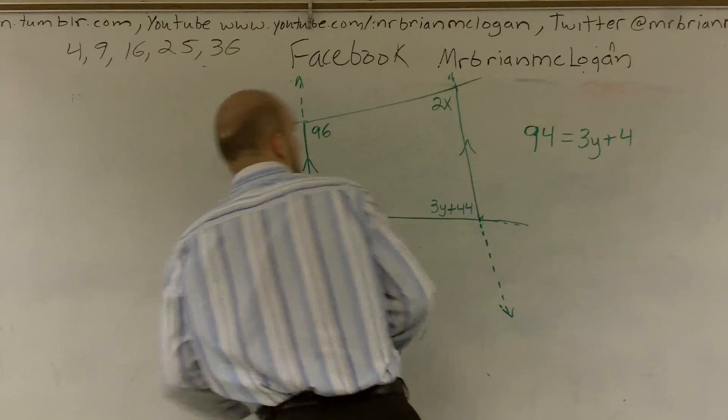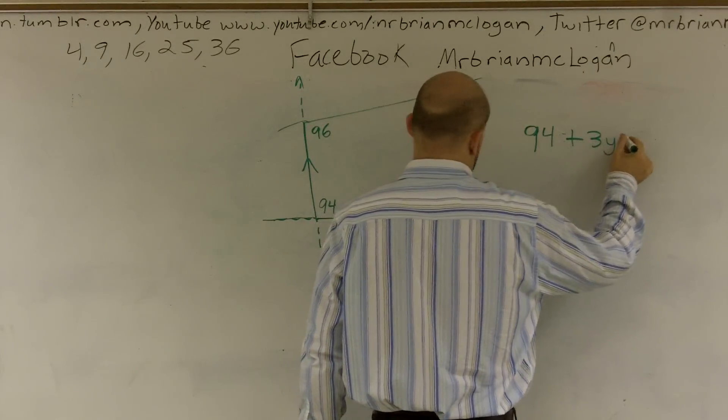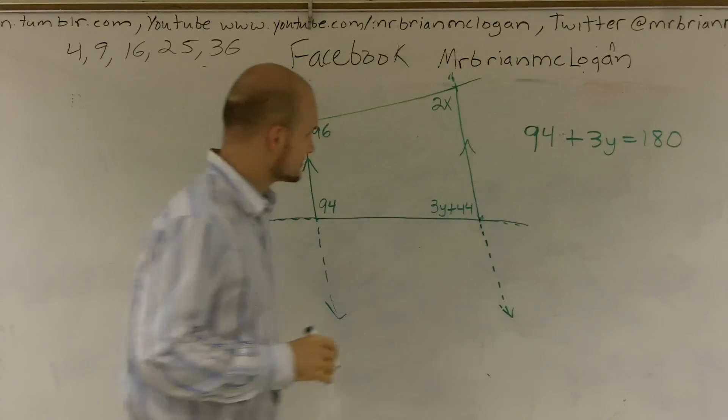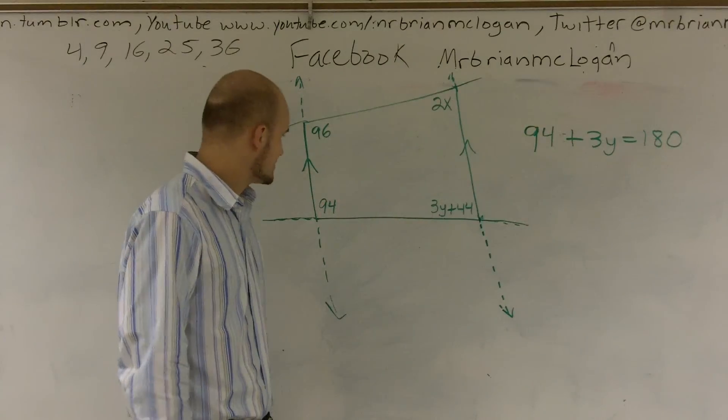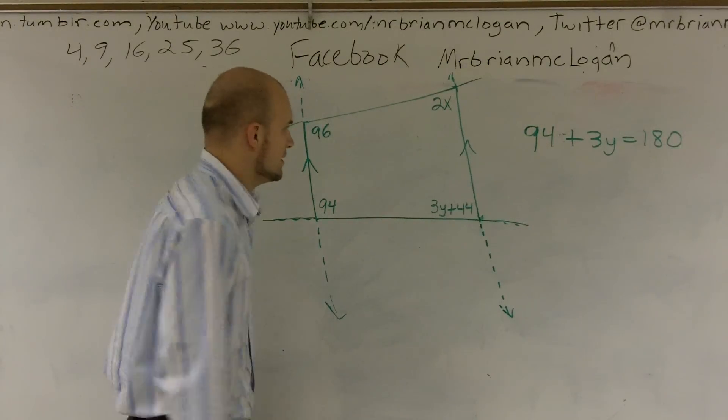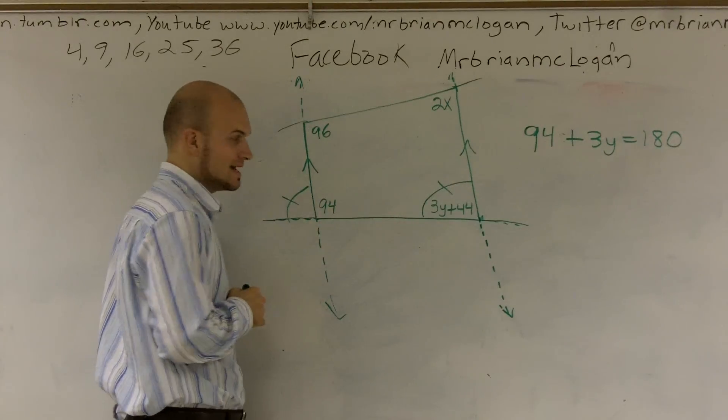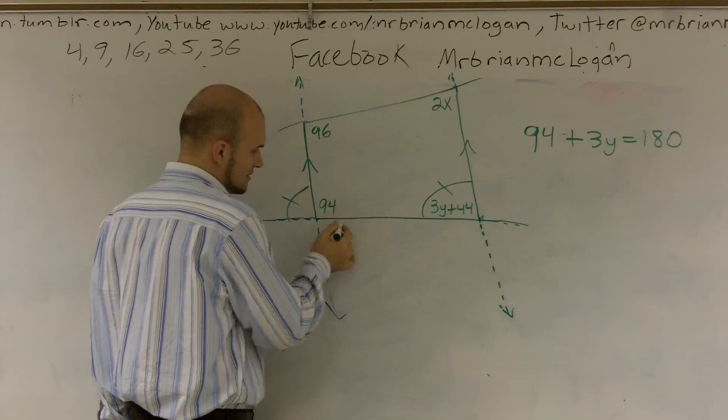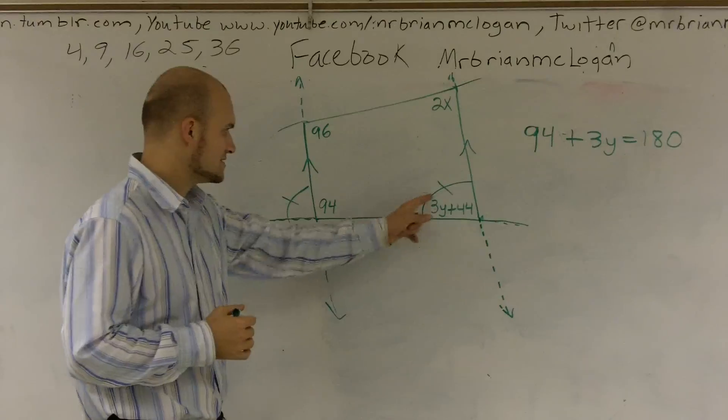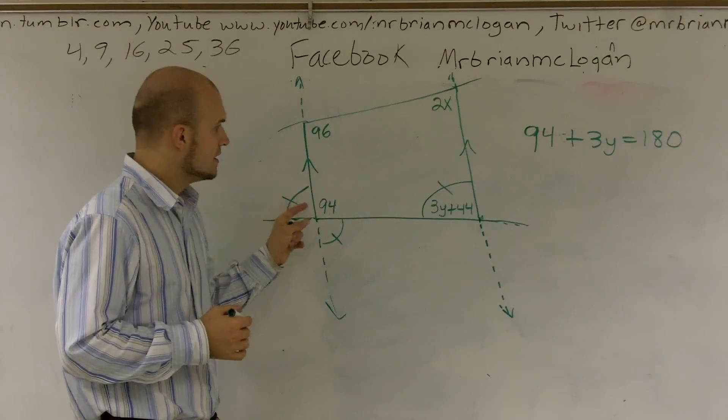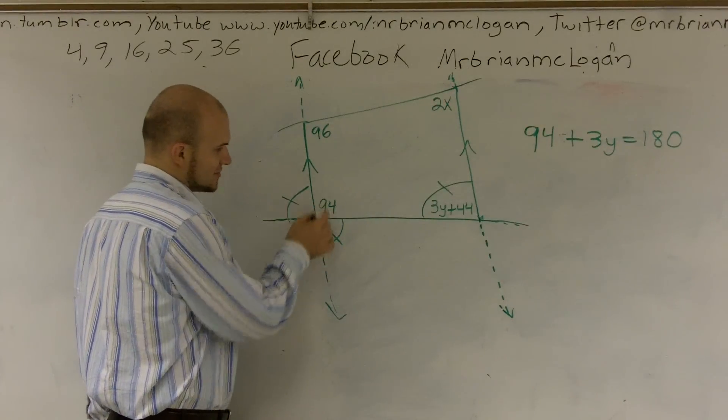This angle is the same as this angle by corresponding angles, or you could also say this angle is equal to this angle by alternate interior angles. Now these are both equal to each other, so therefore these two angles, we know, make up a straight line, so they add up to 180.